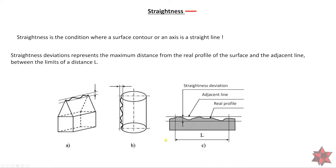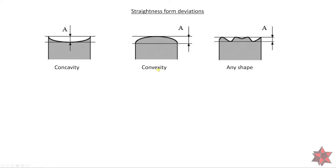The adjacent line and the real profile are measured between the limits of a distance L. Looking at some straightness form deviations, we can have concavity, convexity, or any shape — so this is a form deviation of any shape.